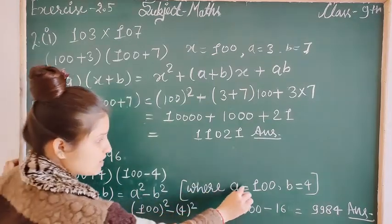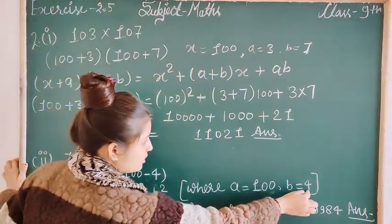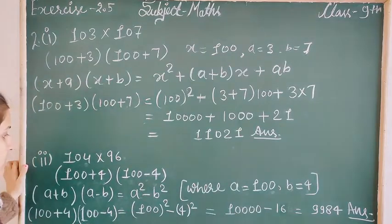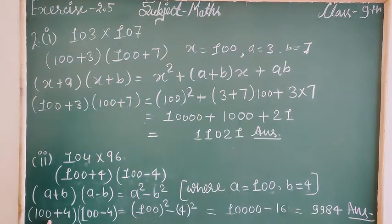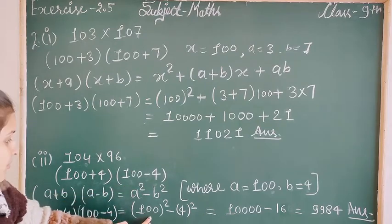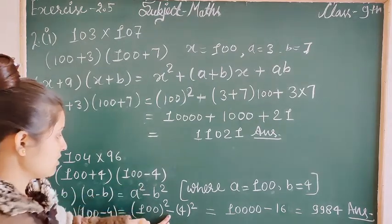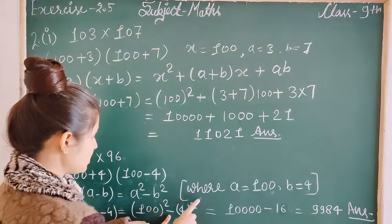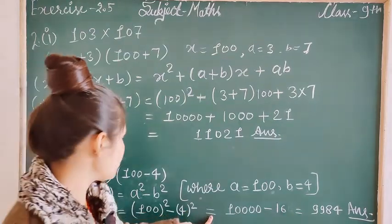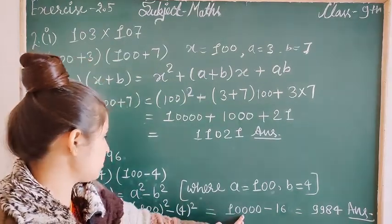Here a=100 and b=4. So (100+4)(100-4) = a²-b² = 100²-4². 100² is 10,000 and 4² is 16.